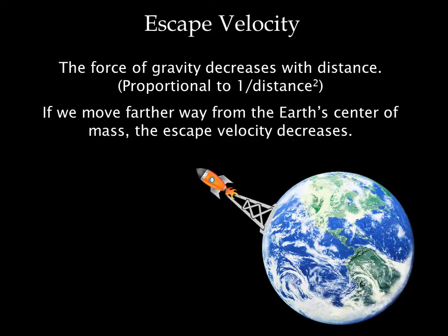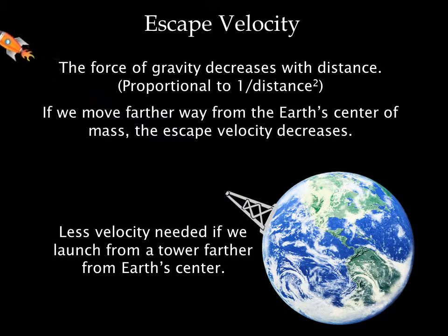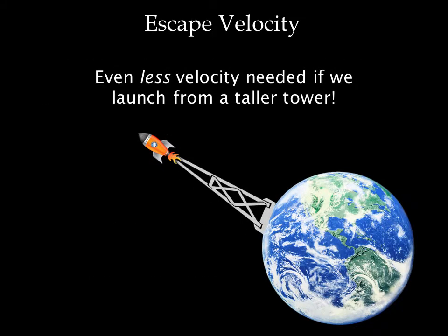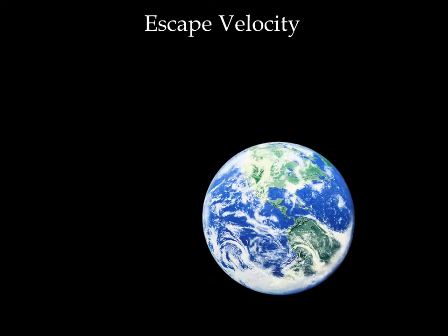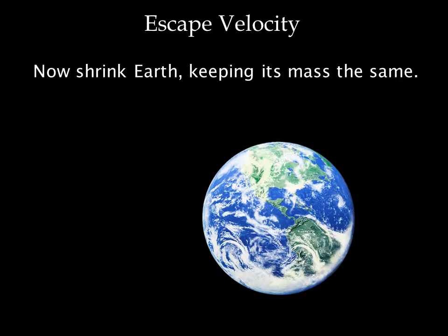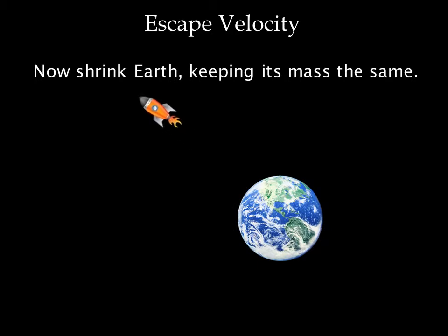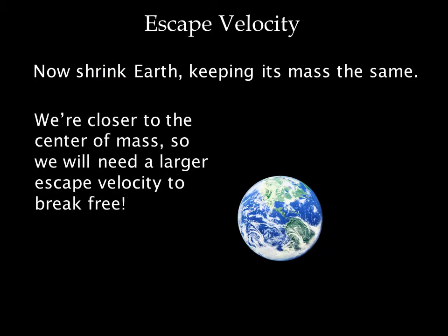The force of gravity decreases with distance according to the inverse square law. This means if we move farther away from Earth's center of mass, gravity will be less, and the escape velocity — the velocity we need to break free of gravity — decreases. We need even less velocity if we launch from a taller tower. Now imagine what would happen if we could shrink Earth, keeping its mass the same. The smaller we make Earth, the closer the surface is to the center of mass. Therefore, gravity on the surface increases, and we'd need a larger escape velocity to break free.